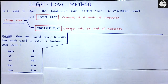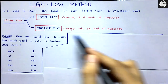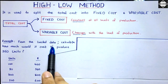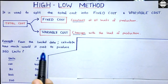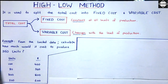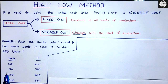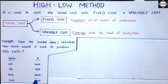Now let's understand the calculation part with an example. From the limited data given, we need to calculate how much it would cost to produce 350 units. We are given: 100 units costs $400, 80 units costs $360, 300 units costs $800, and 200 units costs $600.